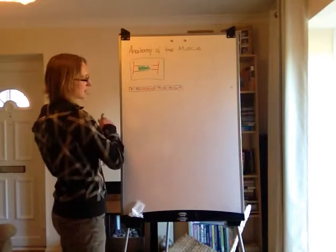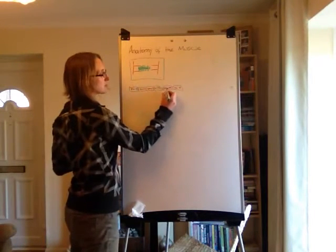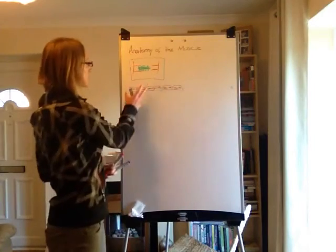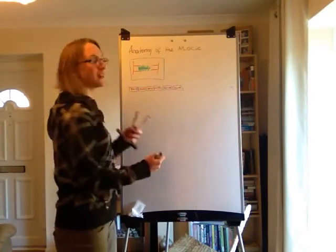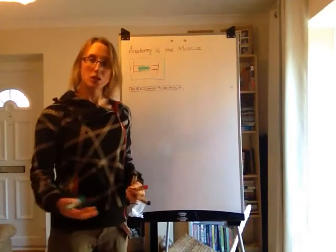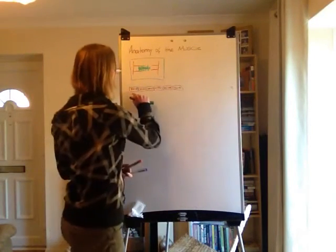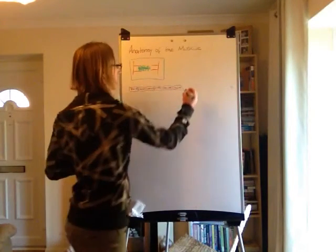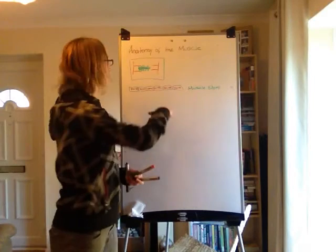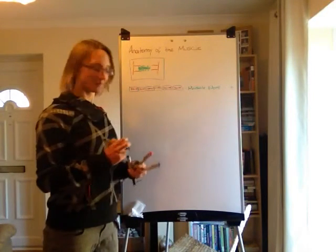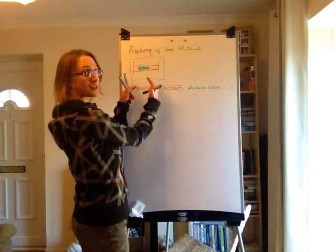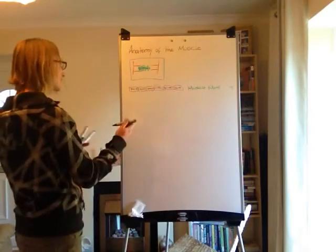If one sarcomere is contracting, all of them are contracting. So we don't just rely on one actin and myosin doing its job — we're relying on all of them. If one concertinas, all of them concertina. These line up down the muscle fiber, which is why every muscle has a kind of striated stripe to it, given by its muscle fiber. A muscle fiber is a collection — a long line of these little sarcomeres. As these contract you can see the fiber gets smaller during the concentric phase, and then during the eccentric phase they lengthen back out.